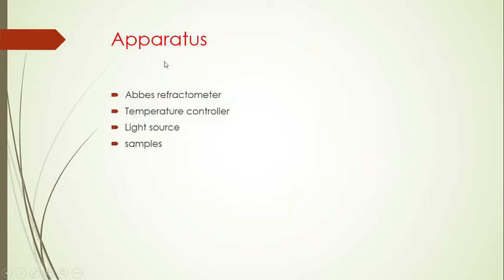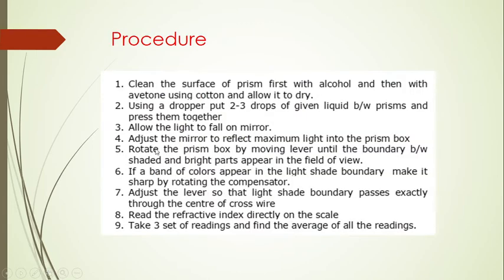For this practical, the apparatus includes an Abbe's refractometer, a temperature controller, a light source, and the liquid sample whose refractive index is to be determined. To carry out the practical: Step 1 — clean the prism surface with alcohol and acetone using cotton and allow it to dry. Step 2 — use a dropper to place two to three drops of the liquid between the prisms and close them together. Step 3 — allow light to fall on the mirror.